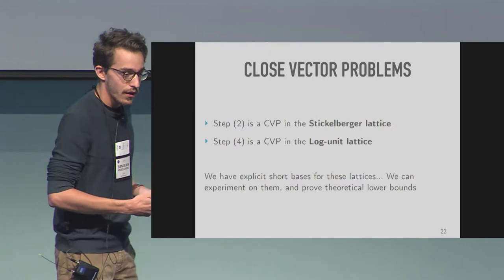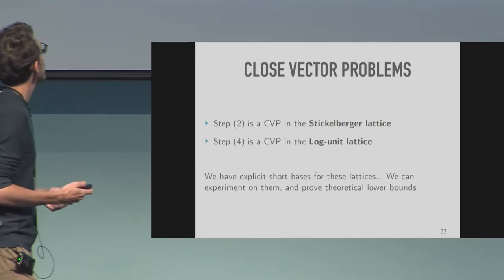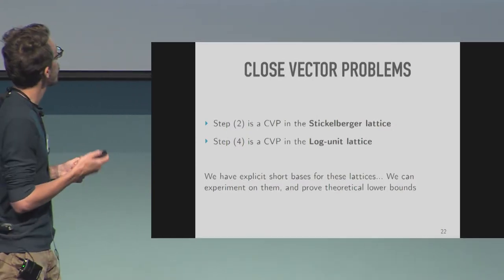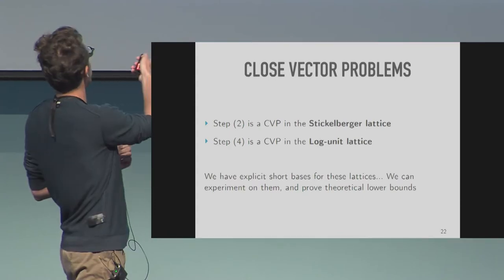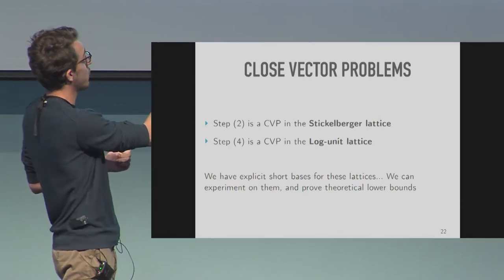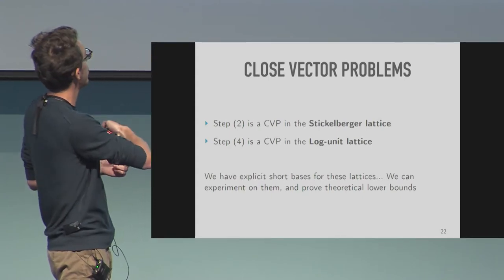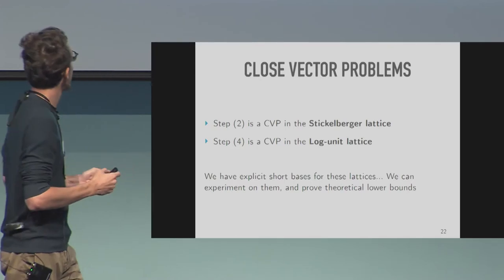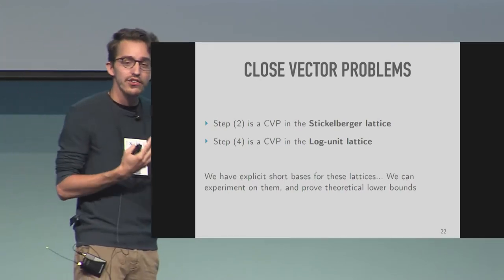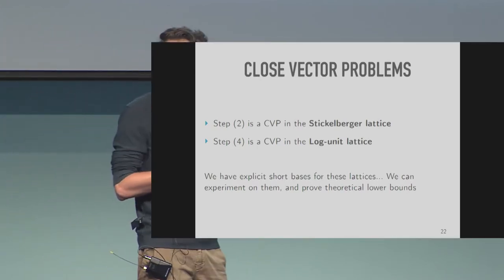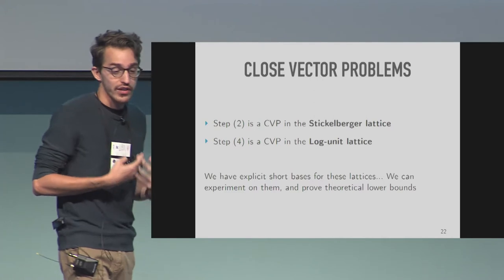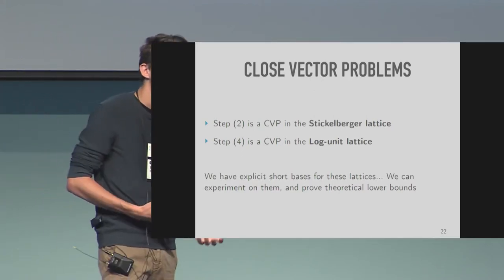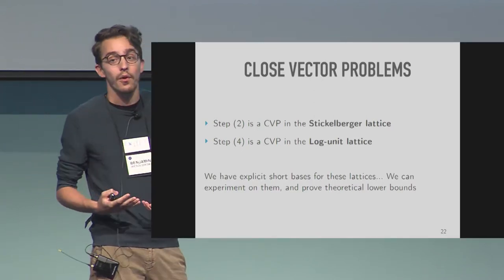We have two CVP instances: step two with respect to the Stickelberger lattice, and step four with respect to the logarithmic unit lattice. For these lattices we know explicit short bases, so we can experiment with them, run numerical simulations, and prove theoretical lower bounds.